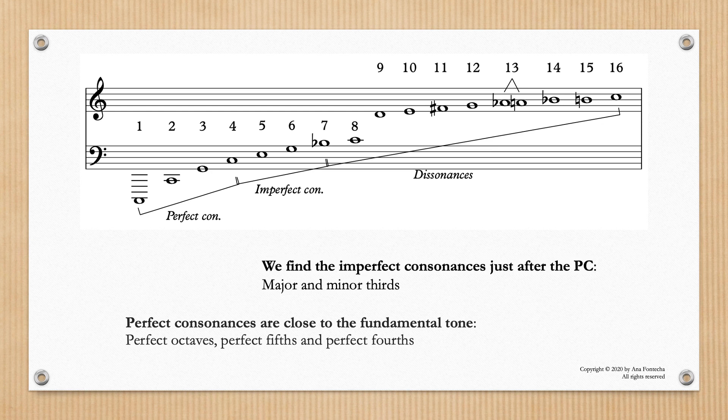We find the imperfect consonances just after the perfect consonances, major and minor thirds. Dissonances are the last group, major and minor seconds.